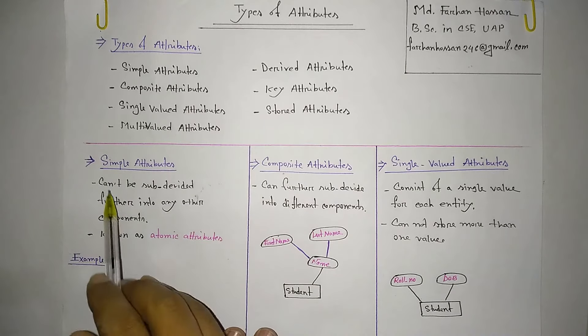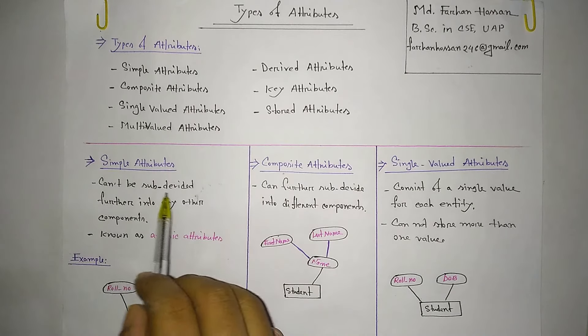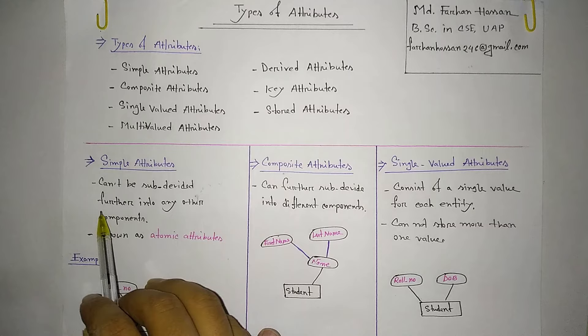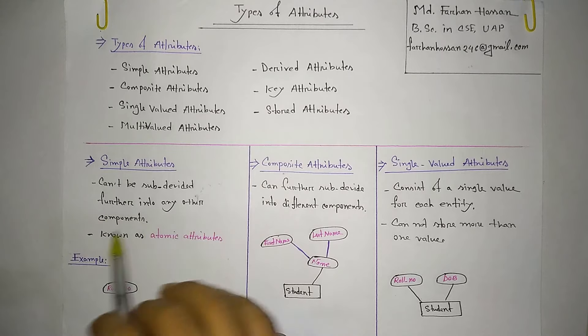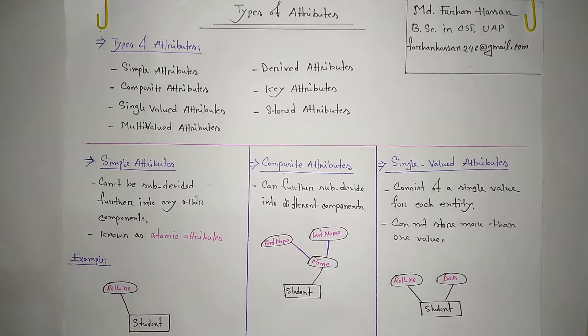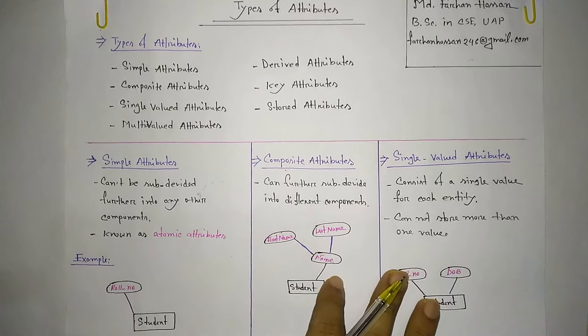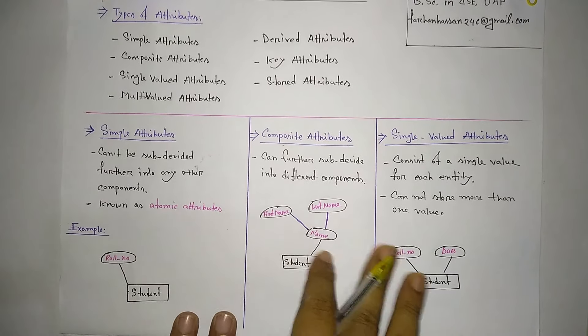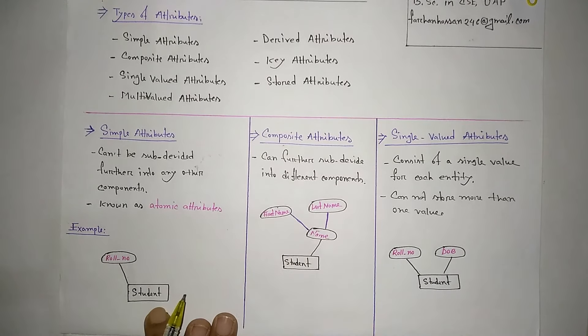A simple attribute is one that cannot be subdivided further into any other components. For example, student is an entity. The roll number is one attribute of that entity.